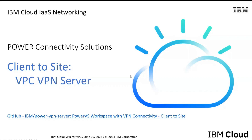Hi and welcome to Power Connectivity Solutions demo. This demo will show you how to create a client-site VPC VPN server using automation. This server will allow you to connect your local workstation into a remote Power VS workspace in IBM Cloud. The automation is created using Terraform and is hosted on IBM's GitHub repository: power-vpn-server.